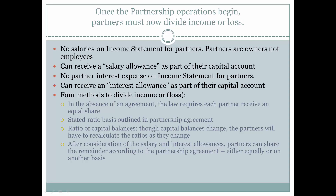There are four methods to divide income or loss once partnership operations have begun. In the absence of an agreement, the law requires each partner to receive an equal share. It can also be divided based upon a stated ratio outlined in the partnership agreement, or as a ratio of the capital balances — though as capital balances change, partners will need to recalculate those ratios. The fourth, more complicated method combines salary and interest allowances with a remaining balance shared per the partnership agreement.